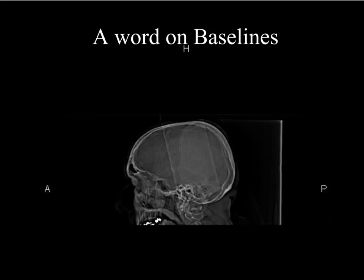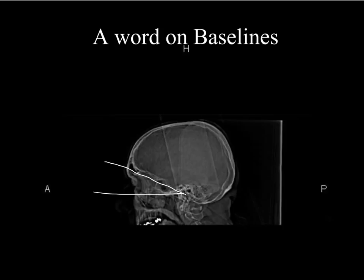Just a very brief word on baselines. Some of you have been out on your neuro placements and probably seen this. Neuro uses a very different baseline to other hospitals — district general hospitals usually tend to use the anthropological or a variation of it. The anthropological baseline basically goes from the external auditory meatus to the infraorbital margin. This has the benefit of reducing beam hardening artifacts, but it does increase radiation dose to the lens of the eye.